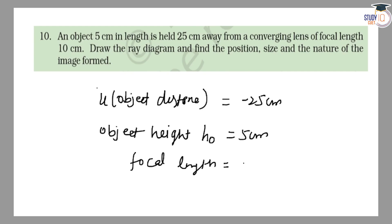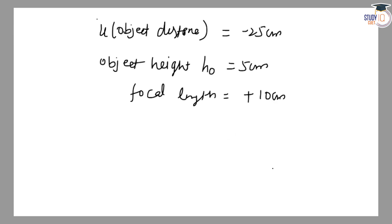Now we know the formula: 1/V - 1/U = 1/F. Using the values of U and F given here, the value of V is 16.66 cm with a positive sign.